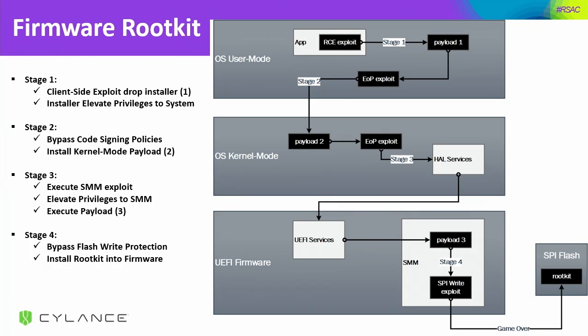Usually firmware exploits are really hard because you need privilege escalation to kernel mode, then privilege escalation to System Management Mode — the most privileged mode in x86 systems — and then you can try to figure out memory protections and get into the SPI flash. Usually it's a bunch of zero-days to get into the BIOS, or if the BIOS is not updated it can be just one vulnerability — low-hanging fruit. In terms of stages: we have a client-side exploit dropper and installer, elevate privilege to system, bypass code signing, install the kernel mode payload, execute the SMM exploit, elevate privilege, and then execute the actual payload.